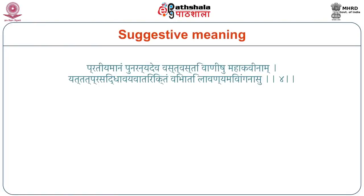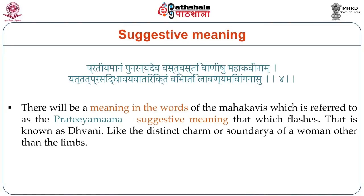Coming to what is suggestive meaning — what Anandavardhana meant by it is: like the lavanyam, the distinct charm, the saundarya of a woman other than her beautiful limbs, which pleases the eyes of the beholder. In the same way, there will be a meaning in the words of the Mahakavis which is referred to as the Pratiyamana — suggestive meaning — that which flashes. That is known as Dhvani.